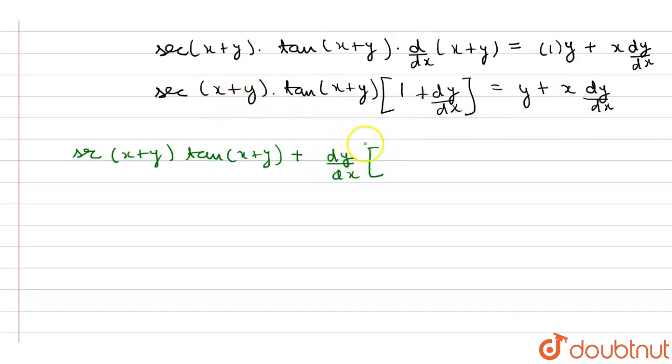Now we will get sec of x plus y times tan of x plus y minus x, because when we bring this on this side, this will be minus x.